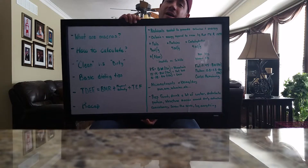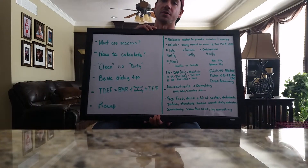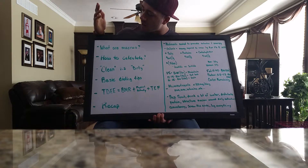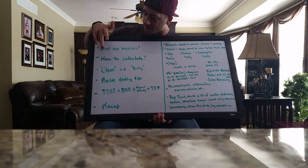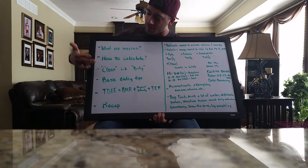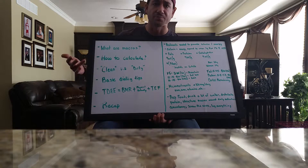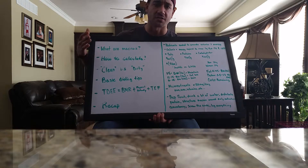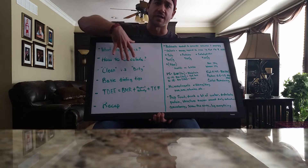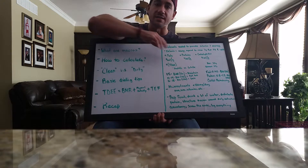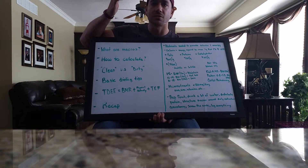I'm a visual learner, so I've got a whiteboard that I'll probably be bringing up on screen back and forth. We're going to start with what are the macros and how to calculate them, then we're going to dive into clean and dirty foods and basic dieting tips. Feel free at any time to pause the screen and write any of this information down. But yeah, let's start off with what are macros.